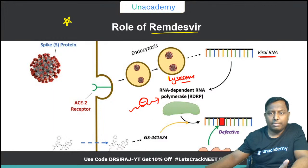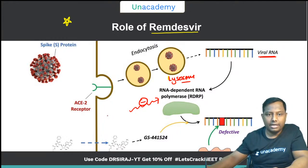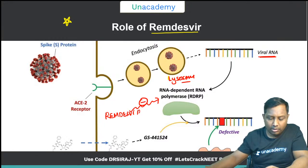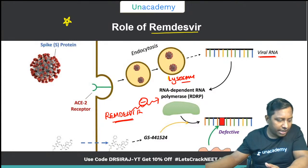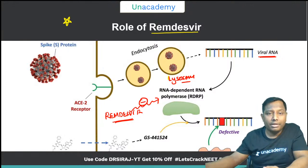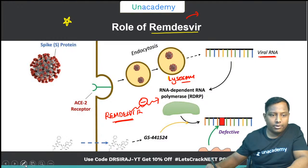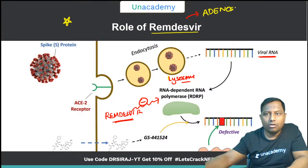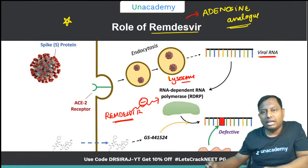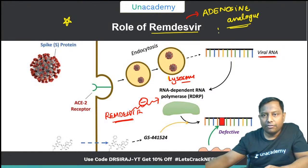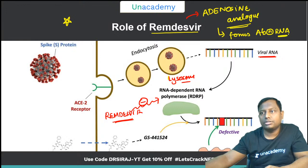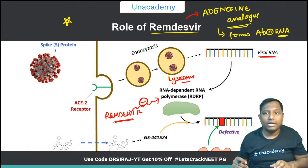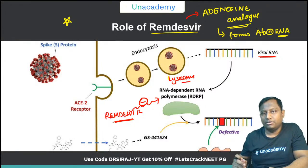Remdesivir also acts by inhibiting RNA-dependent RNA polymerase. An important MCQ point: remdesivir is an adenosine analog. It gets incorporated into the viral RNA and forms abnormal/imperfect RNA. So the examiner may ask: remdesivir is an analog of which drug? Answer: adenosine analog. And its mechanism of action is inhibiting RNA-dependent RNA polymerase.